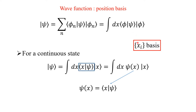We now change the basis from |φ⟩ to |x⟩, so the position eigenstate |x⟩ becomes our basis. The inner product ⟨x|ψ⟩ represents how much of the x component is projected over |ψ⟩ — this is nothing but the wave function ψ(x). So ψ(x) = ⟨x|ψ⟩, and the position-space representation becomes |ψ⟩ = ∫ dx ψ(x) |x⟩.